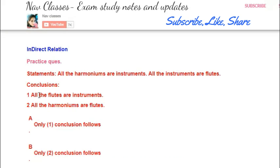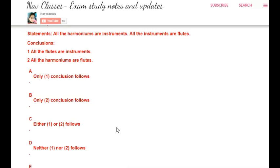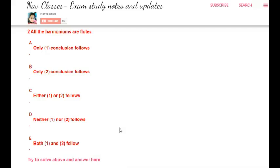In another case, the conclusion says 'all harmoniums are flutes,' where harmonium and flute have an indirect relationship — they can be connected through an intermediate term like instruments. So this is an example of an indirect relation, which you have to solve. Try this question and tell me the answer.